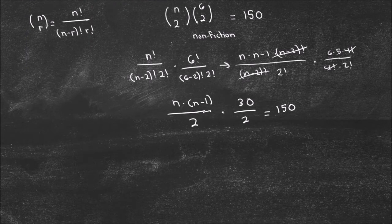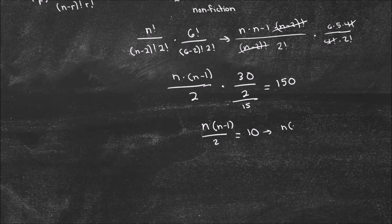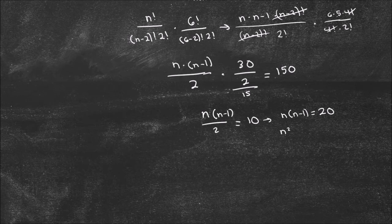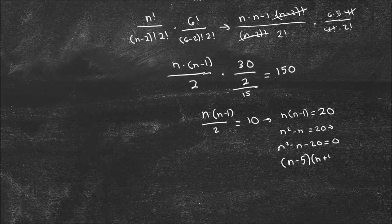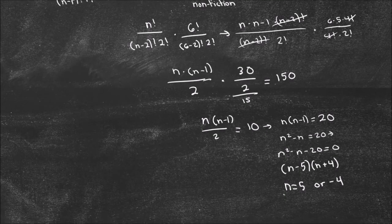Well, 30 divided by 2 is 15. Dividing both sides by 15 gives n times (n minus 1) divided by 2 equals 10. Multiplying both sides by 2 gives n times (n minus 1) equals 20. Now I solve a little quadratic: n squared minus n equals 20, so n squared minus n minus 20 equals 0. Factoring gives (n minus 5)(n plus 4) equals 0. So n equals 5 or negative 4. Logically it has to be 5 — I can't have negative fiction books.